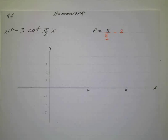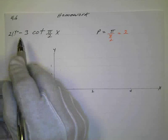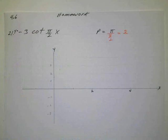Okay, these are some more problems from section 4.6, and the first one is Y equals negative 3 cotangent of pi over 2 X.